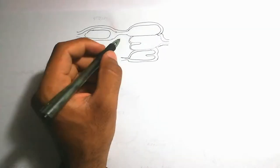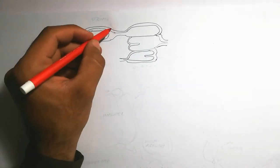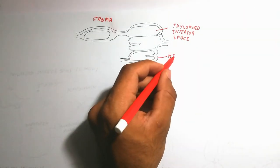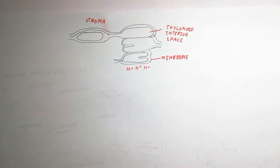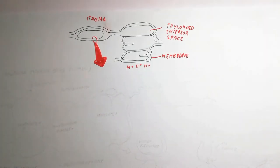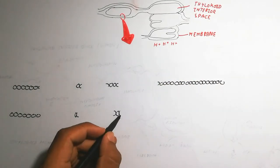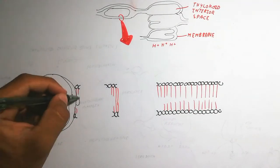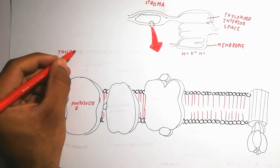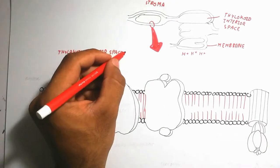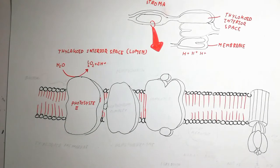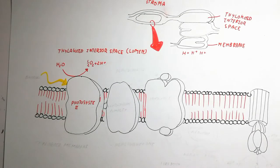Looking at the structure: there is the stroma, the thylakoid interior space (lumen), the thylakoid membrane, and the outer side where protons accumulate. The thylakoid membrane contains different enzymes made of protein. Photosystem II is the first system involved. Inside the lumen, photolysis splits water into oxygen, protons, and electrons.